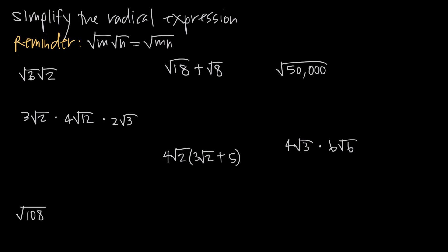In this first problem we have the square root of 3 times the square root of 2 — two square roots multiplied together. The formula tells us we can take the values underneath those square root signs and put them together under one square root. So this equals the square root of 3 times 2, and since 3 times 2 is 6, we get the square root of 6.